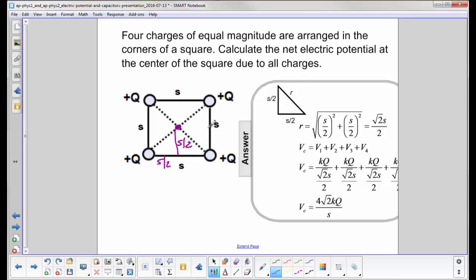Which we're showing here. So the distance R, using Pythagoras, is the square root of S over 2 squared plus S over 2 squared, and we get this value for R.